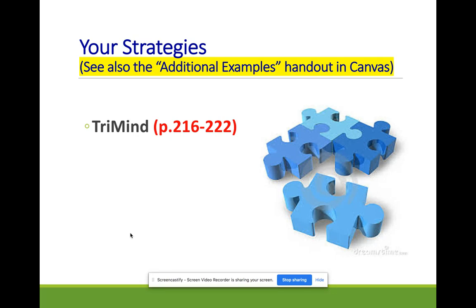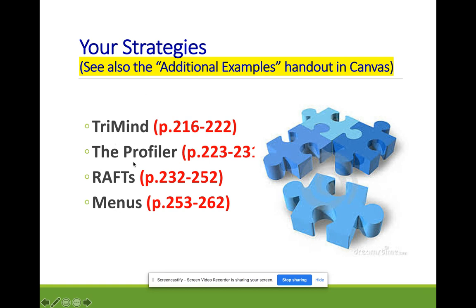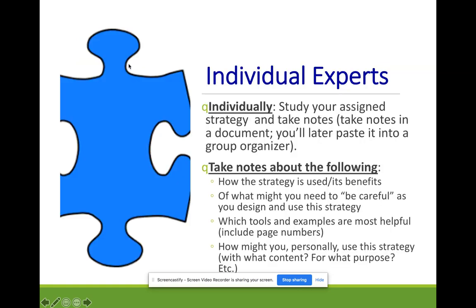You can find your strategies at these pages in the book: Tri-Mind, Profiler, RAFTs, and menus. There are also additional examples in the handout on Canvas — you'll only find one per content area in the book, but the handout has more. Here's how it works: individually, study your assigned strategy and take notes in a document you'll later paste into a group organizer. Take notes on how the strategy is used and its benefits, what you need to be careful of when designing it, which tools and examples are most helpful with page numbers, and how you might personally use it — with what content or for what purpose.